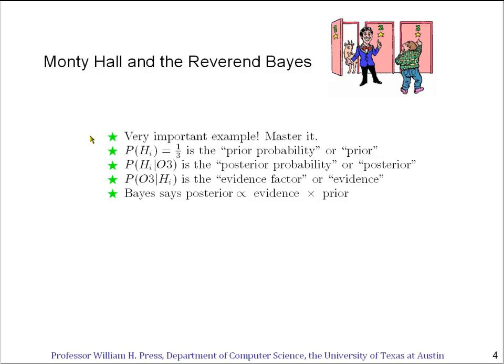The terminology we've heard before: the probability of each hypothesis before we see any data is called the prior, and in this case it had the value one-third for all three hypotheses.